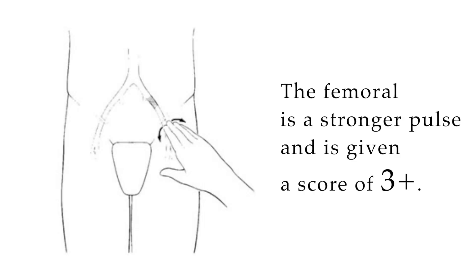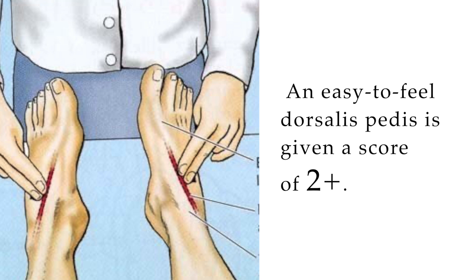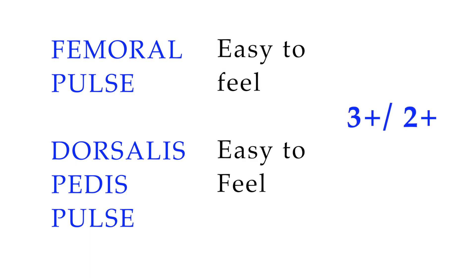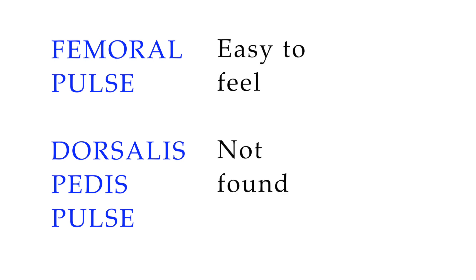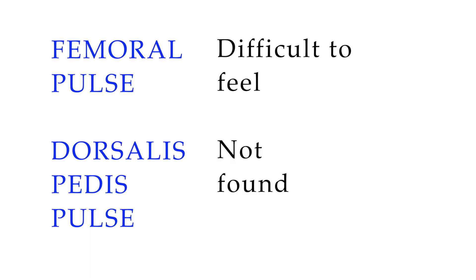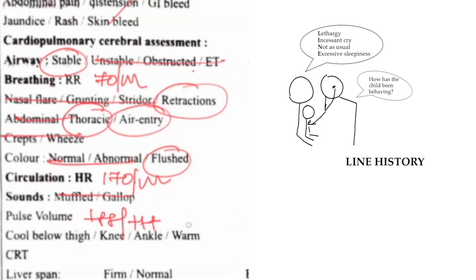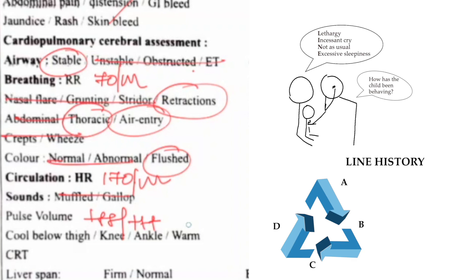The femoral pulse is a stronger pulse and is given a score of 3+, and an easy-to-feel dorsalis pedis is given a score of 2+. If the femoral pulse is well felt but you need to search for the dorsalis pedis to locate it, the score is 3+ / 1+. If the femoral is felt easily but the dorsalis pedis is not found, the score is 3+ / 0. If you have difficulty feeling the femoral and the dorsalis pedis is not felt, the score is 2+ or 1+ / 0. Once scored, pulses are interpreted by taking the LINE history and the other parts of the triangle into account.